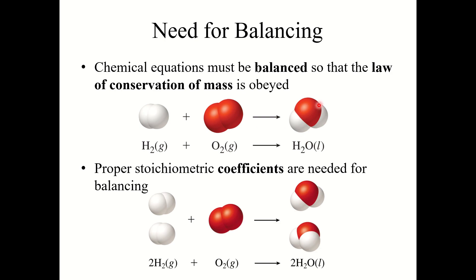Our chemical equations must be balanced. We talked about this in chapter 2 — it's the law of conservation of mass, one of Dalton's postulates: atoms cannot be created or destroyed, they are simply rearranged. Because of this, chemical equations must be balanced, and proper stoichiometric coefficients are needed. We cannot change subscripts because that would fundamentally change the identity of the molecule; we can only change the coefficients.